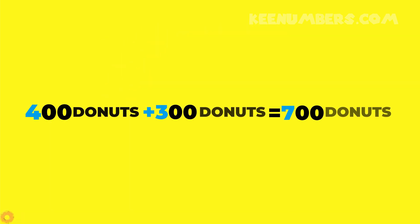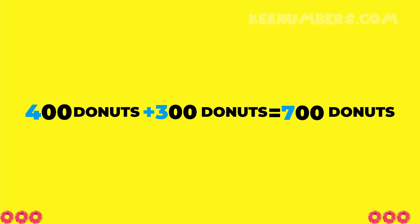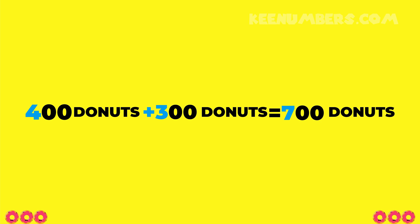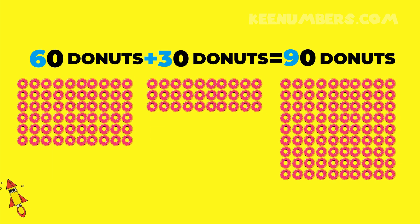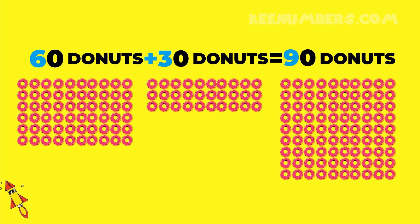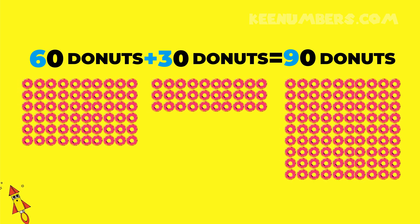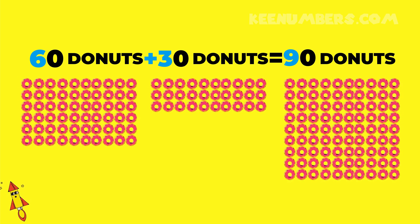Similarly, 400 donuts plus 300 donuts — that's equal to 700 donuts, because 4 and 3 are 7. Likewise, 60 and 30 is equal to 90. So 60 donuts plus 30 donuts is 90 donuts because 6 plus 3 is equal to 9.